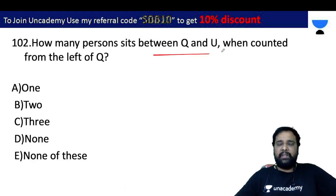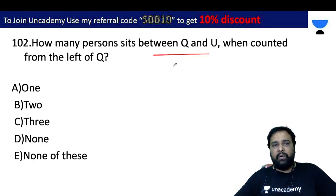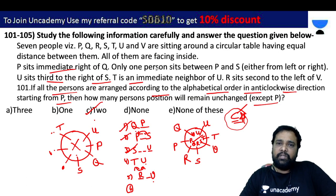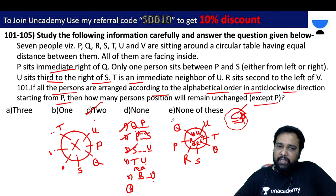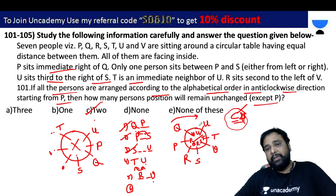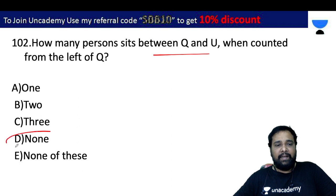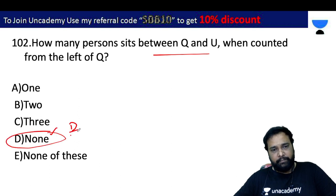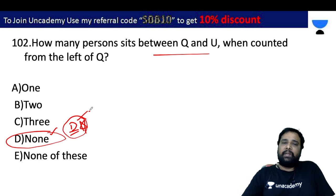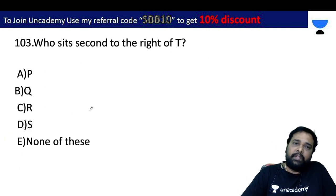How many persons sit between Q and U when counted from the left side of Q? Counting from Q's left side towards U, there is none. So the answer is D — none. D only is the right answer for problem number 1, question 2. Who sits second right of T? The answer is B, the second option.